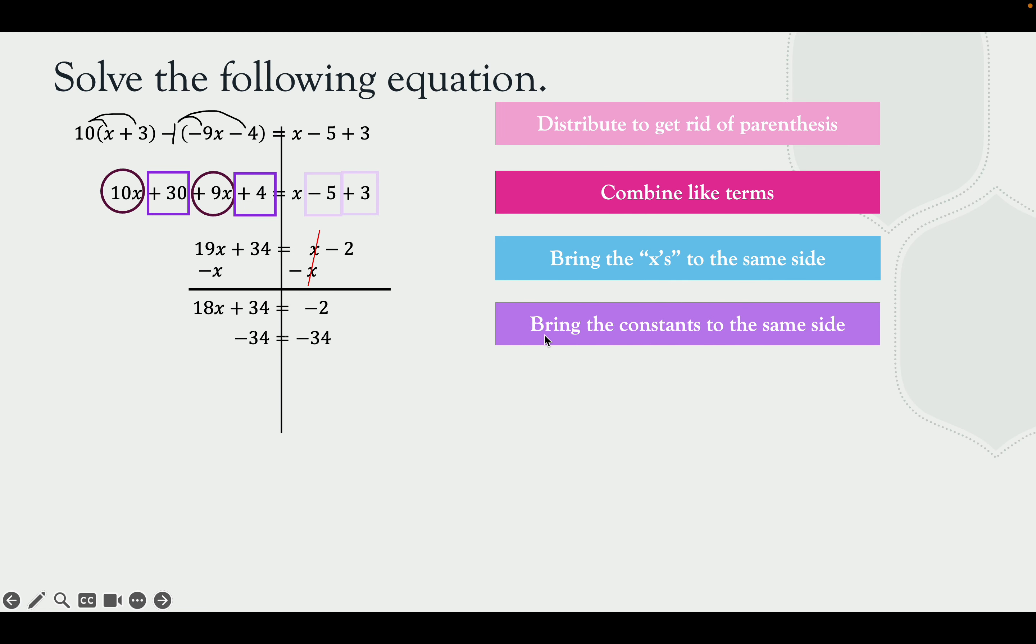Bring the constants to the same side. So the plus 34, let's slide it over. We get 18x equals negative 36. Divide to get x by itself. And we get x equals negative 2. Let's double check our solution.